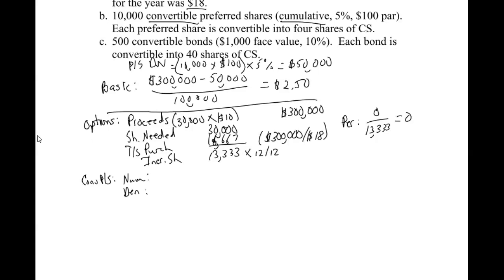Now we're saying it's convertible. Remember, we're saying since it's convertible, we're assuming it would have been converted on day one of the year, which means there never would have been a dividend because there wouldn't have been any preferred stock, which means we need to add back that $50,000. So make sure you're clear on why we're doing that.